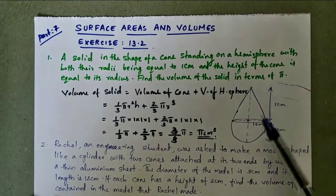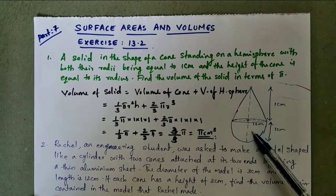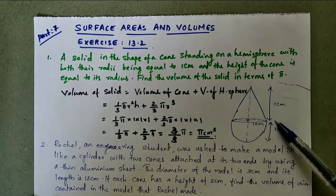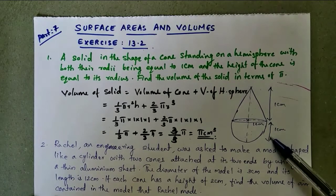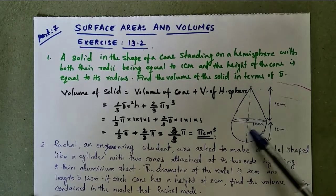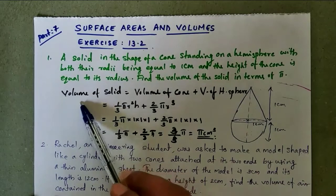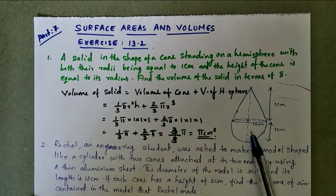So we have a cone and hemisphere attached together. The height of the cone is one centimeter and the height of the hemisphere is equal to one centimeter, both are same and its common radius is one centimeter. We have to find the volume of the solid. So volume of solid is equal to volume of cone plus volume of hemisphere.